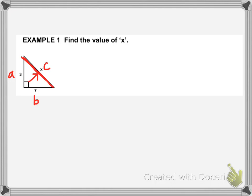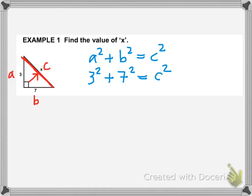Here's how you do it. You're going to start by writing down the Pythagorean Theorem: A squared plus B squared equals C squared. You should always know two sides, so you're going to plug in the values of whatever two sides you know. We know A and B, so we're going to put 3 for A and 7 for B. Once you plug those in, you're going to simplify and try to isolate the other variable. 3 squared is 9, 7 squared is 49, and that equals C squared. 9 plus 49 is 58, which equals C squared.